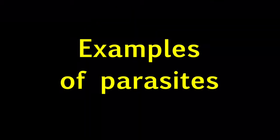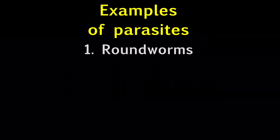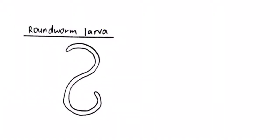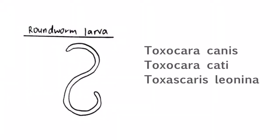We shall now take a look at the eggs and larvae of the different parasites. Firstly, for roundworms, this is the structure of its larva. There are three common kinds of roundworms. Toxocara canis is found in dogs, Toxocara cati is found in cats.